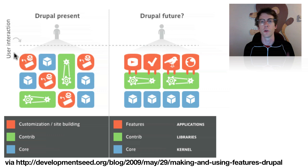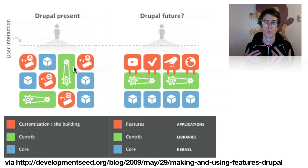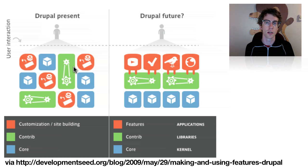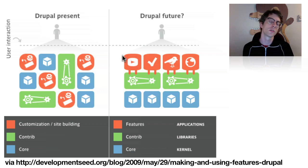When you download a module — say you download the Views module from Drupal.org — it just ends up being one of these boxes and you turn it on. What does it do for you? It appears to do absolutely nothing. It's just a tool, and if you don't know how to use that tool, it appears to do nothing — it's just a tool sitting in your toolbox. What Features tries to do is satisfy a use case — a feature.